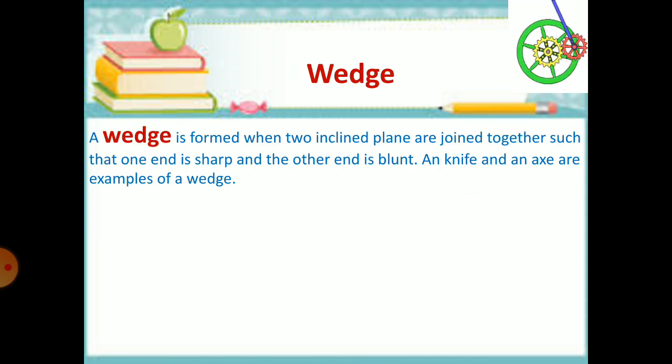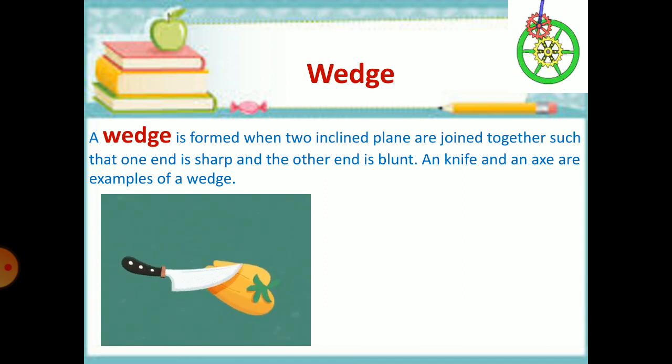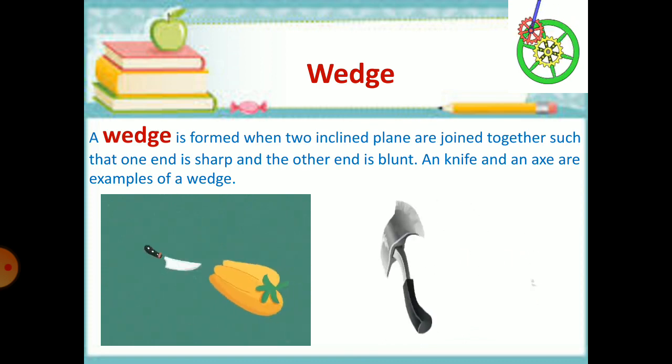Wedge. A wedge is formed when two inclined planes are joined together such that one end is soft and the other end is blunt. Knife and eggs are examples of a wedge.